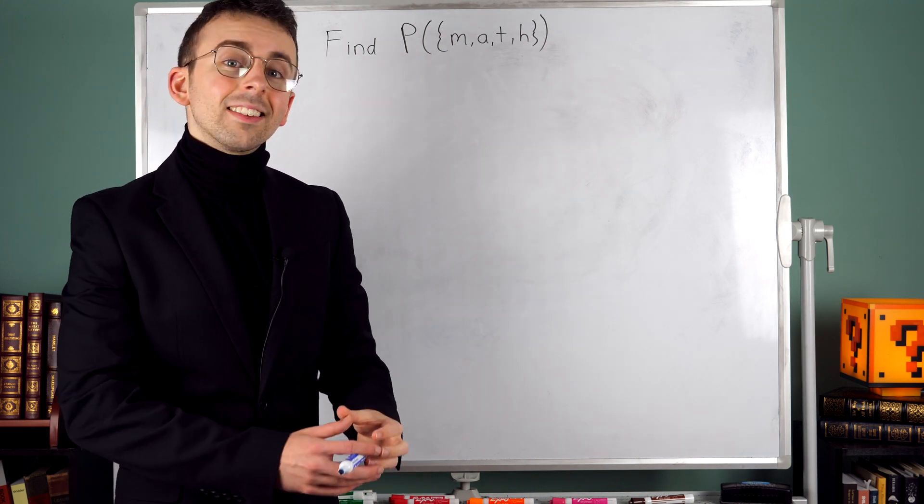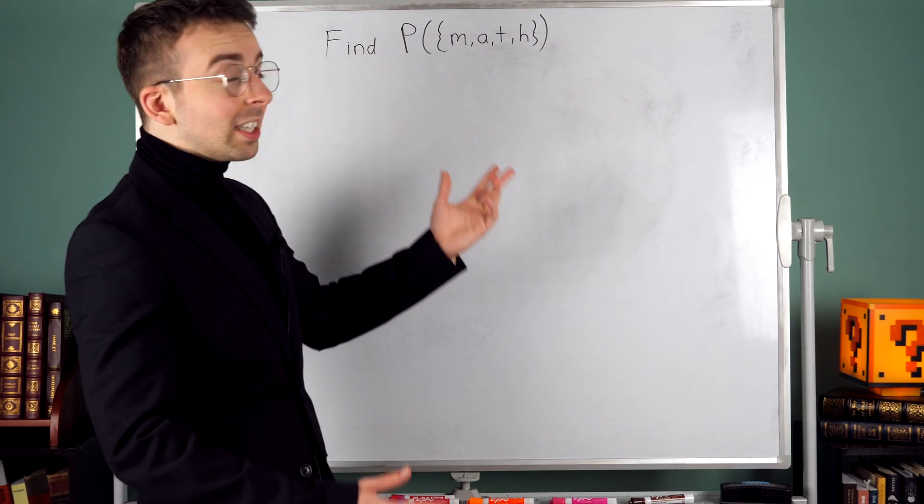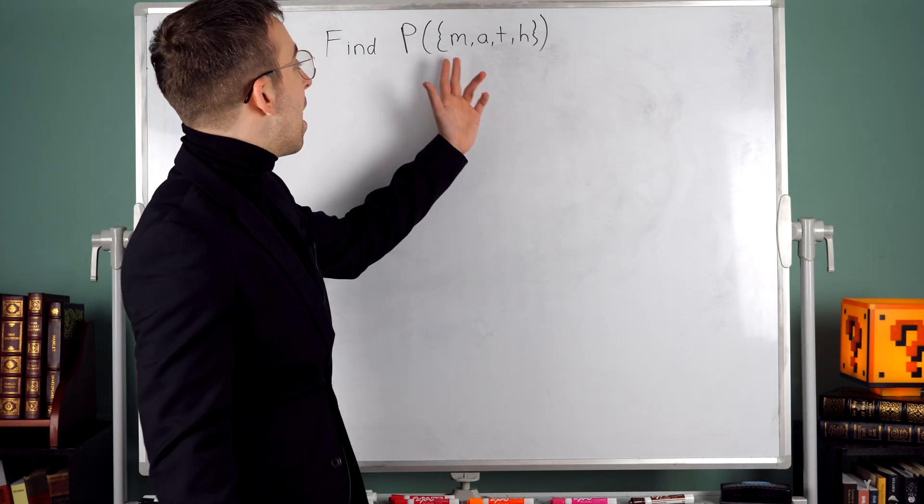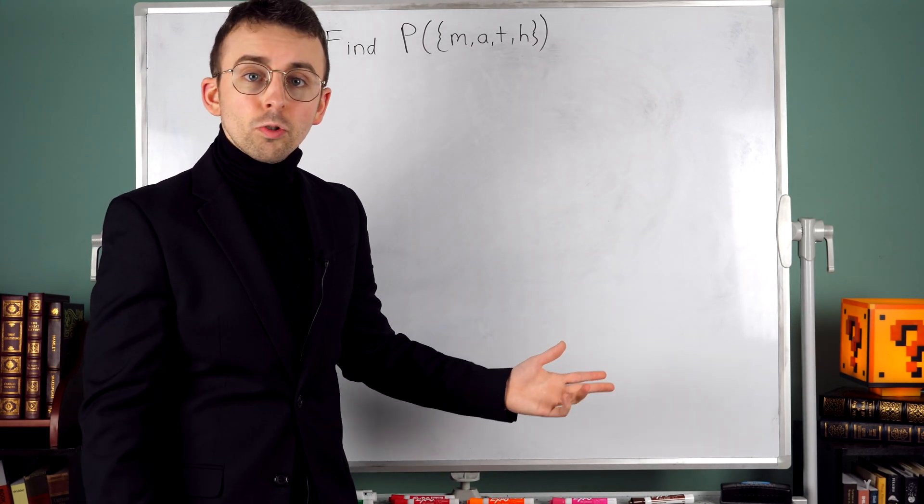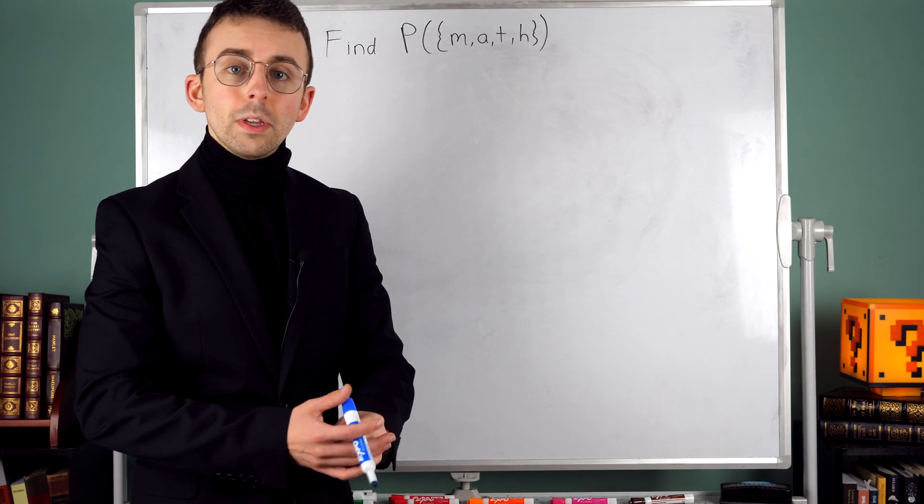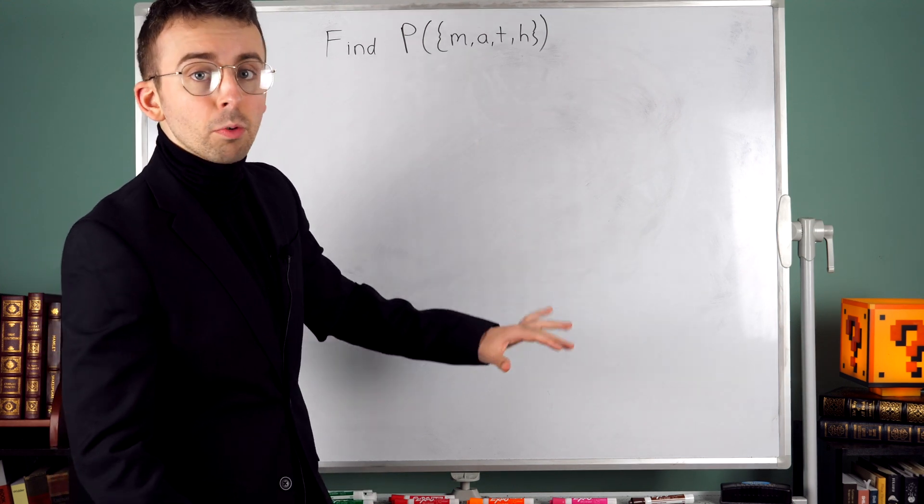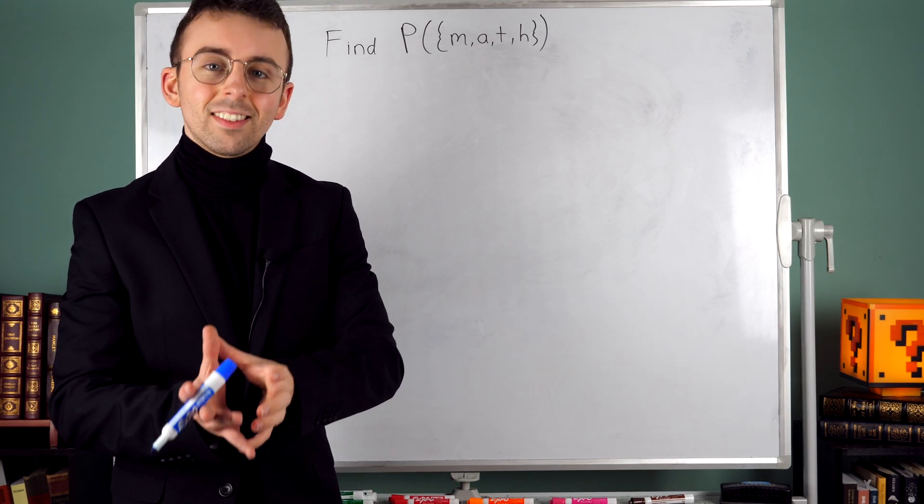We might be thinking of these things as letters, but they could really represent anything. m, a, t, and h could all themselves be sets, and the process that we're going to go through would still be precisely the same.